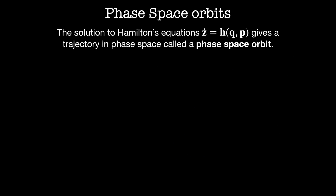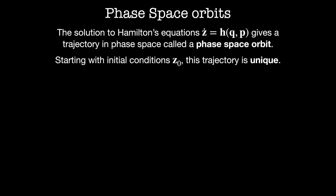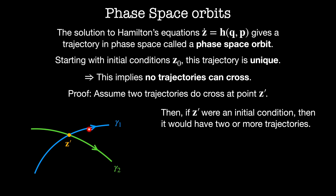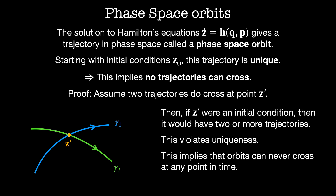In the rest of the video, we'll explore the consequences of this type of dynamics on phase space. The trajectories we just solved for — the solutions to Hamilton's equations — are called orbits in phase space. Starting at a particular set of initial conditions given by a point in phase space, we integrate along the vector field and get a phase space orbit. One of the most important points is that starting with some set of initial conditions z-naught, the resulting trajectory in phase space is unique. This is a theorem. A consequence of this is that no two trajectories can cross. We'll prove this by contradiction: if two trajectories cross at some point z-prime, then z-prime would be an initial condition with two or more trajectories starting from it, which violates uniqueness. Therefore, phase space orbits can never cross at any point in time.